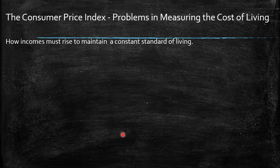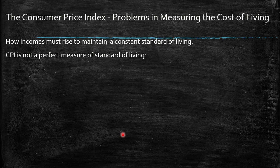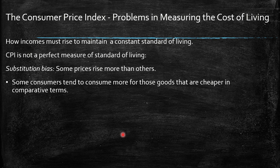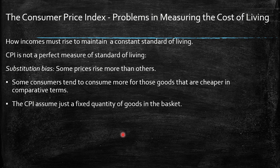How must incomes rise to maintain a constant standard of living? If you receive a higher salary but prices rise faster, your standard of living decreases. The CPI is not a perfect measure of standard of living. The first problem is substitution bias: some prices rise more than others, so consumers tend to buy more of the relatively cheaper goods. The CPI assumes a fixed basket quantity — for example, fixed quantities of hot dogs and hamburgers — ignoring the possibility of substitution.